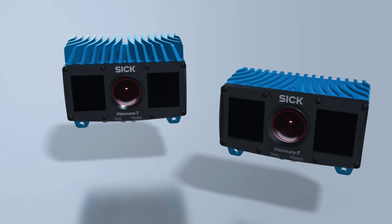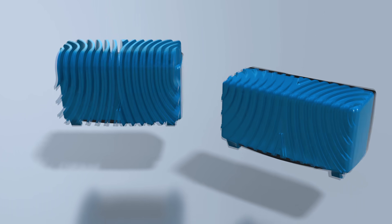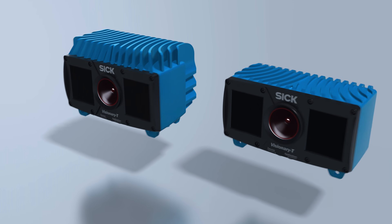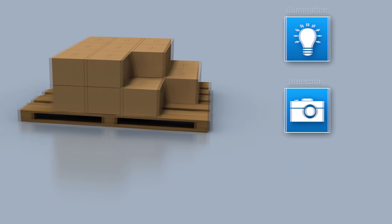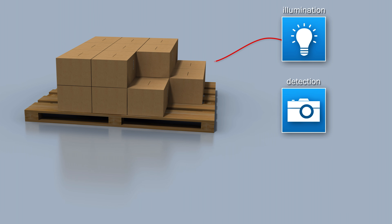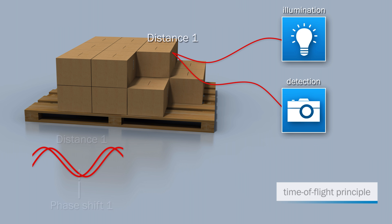Visionary T has a robust housing and is available in two sizes for different environmental temperatures. In order to measure the distance to objects, Visionary T uses the time of flight principle.